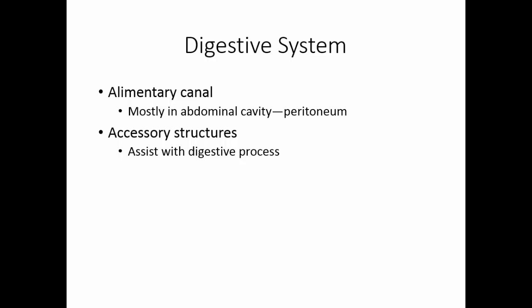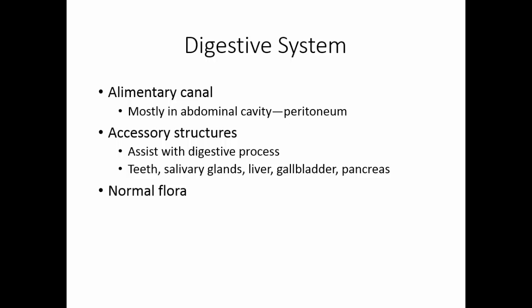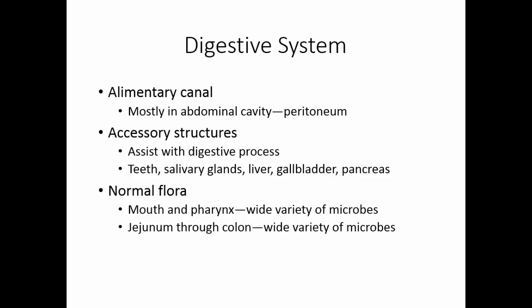Accessory structures assist with the digestive process — things outside the alimentary canal that contribute to the breakdown and absorption of food, such as the teeth, salivary glands, liver, gallbladder, and pancreas. The mouth and pharynx have a wide variety of microbes. The stomach is fairly acidic and the duodenum has numerous digestive enzymes, so few bacteria survive there. From the jejunum through the colon, there is another wide variety of microorganisms. In both locations, normal flora provides microbial antagonism so that other organisms cannot grow there.